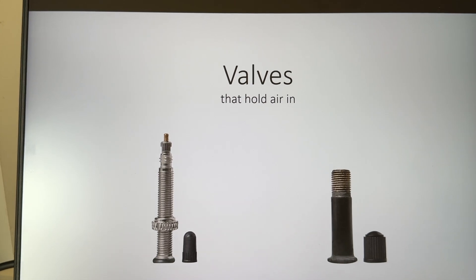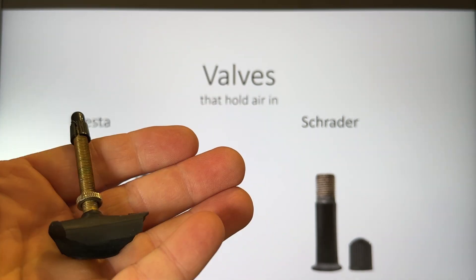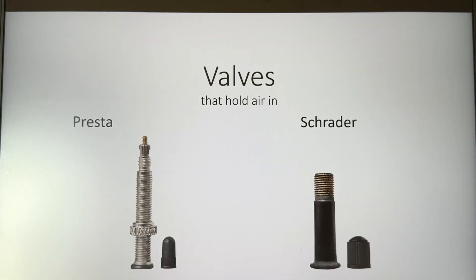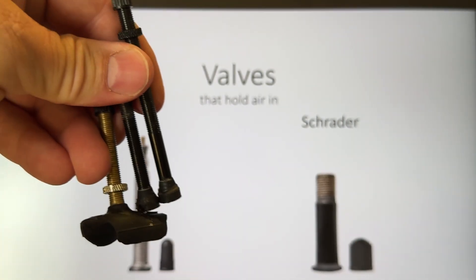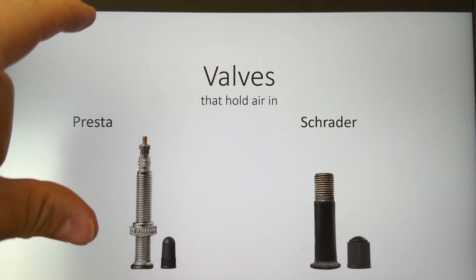Let's take a look at the valves that are used on bicycle wheels that hold air. There are typically these two types of valves - their names are Presta on the left and in the right corner Schrader. Now Presta valves come in different colors, not just the shiny, it could be this brass color or anodized black. They also come in different lengths, shortest, taller, even taller depending on the depth of the rim on the bicycle.